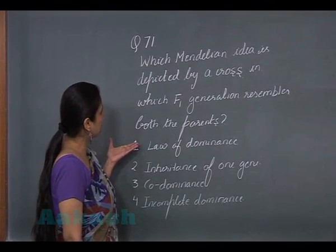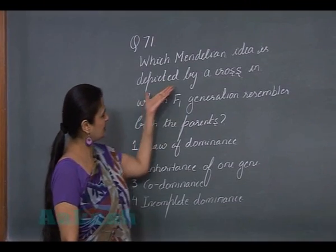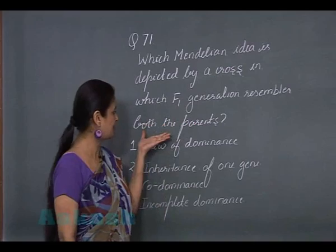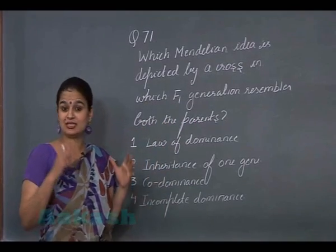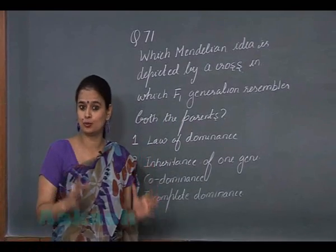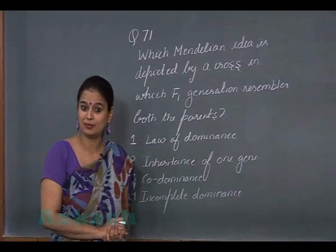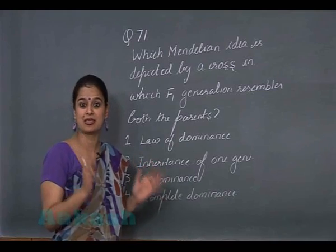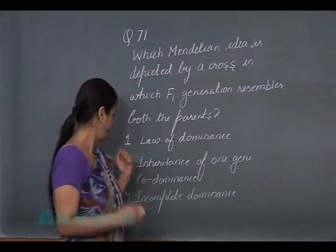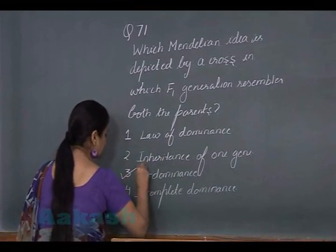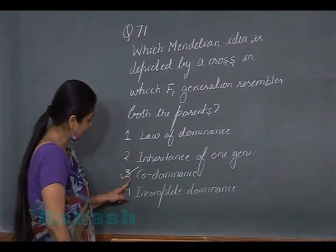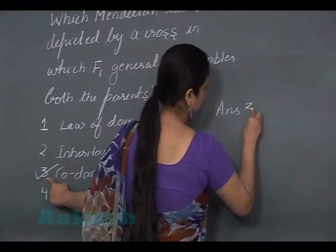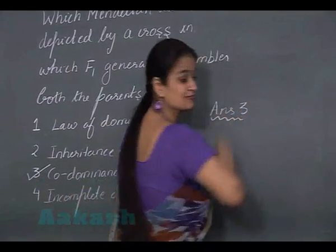In question number 71, we have to identify what is depicted by a cross in which the F1 generation resembles both parents. When the F1 generation resembles both parents, it means both traits are dominant — this is a case of co-dominance. Therefore, for question number 71, the right option is option 3.